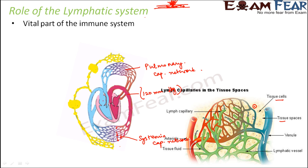What would have happened if there were no lymphatic system at all? In that case, more and more fluid would accumulate in the tissue spaces or interstitial spaces, resulting in swelling of the tissues because too much water would get clogged between them. The lymphatic system helps to get rid of all this extra fluid from the interstitial spaces.